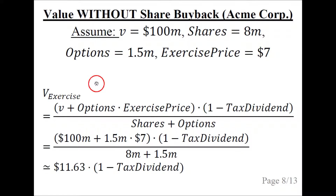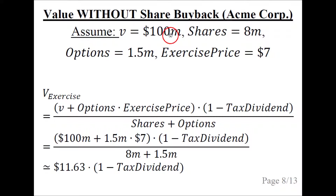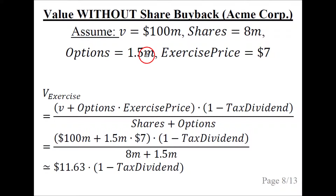Now let's consider an example for ACME Corporation. The value to eternal shareholders, or intrinsic value V, is $100 million. There are 8 million shares outstanding, 1.5 million options, and the exercise price is $7.